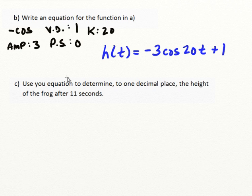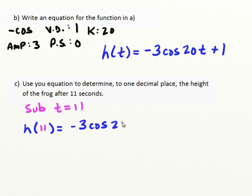To use that equation to determine to one decimal place the height of the frog after 11 seconds, we're going to sub t equals 11 into our equation. I want to know what is the height when the time is 11, and that's going to be equal to negative 3 cosine 20 times 11 plus 1. 20 times 11, we know that is 220. So this is equal to negative 3 times the cosine of 220 plus 1.